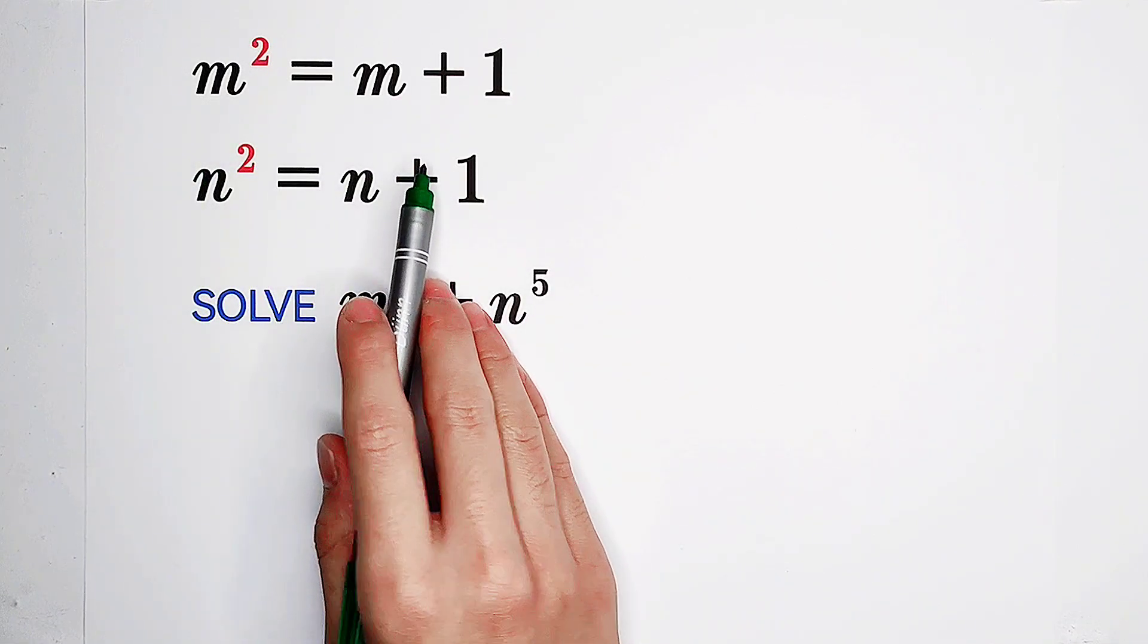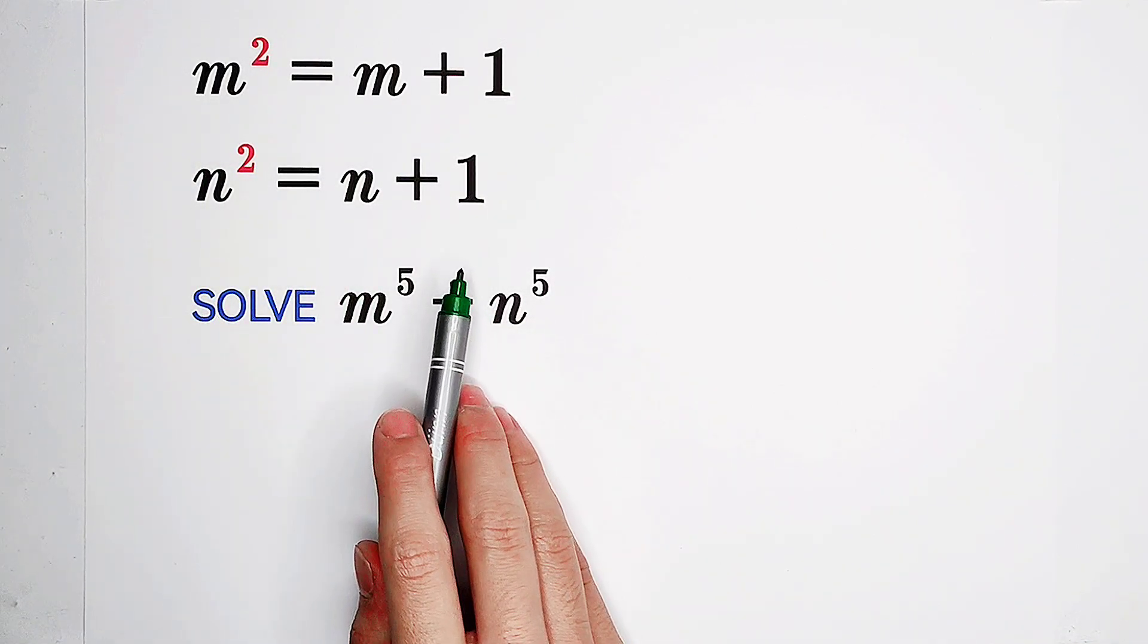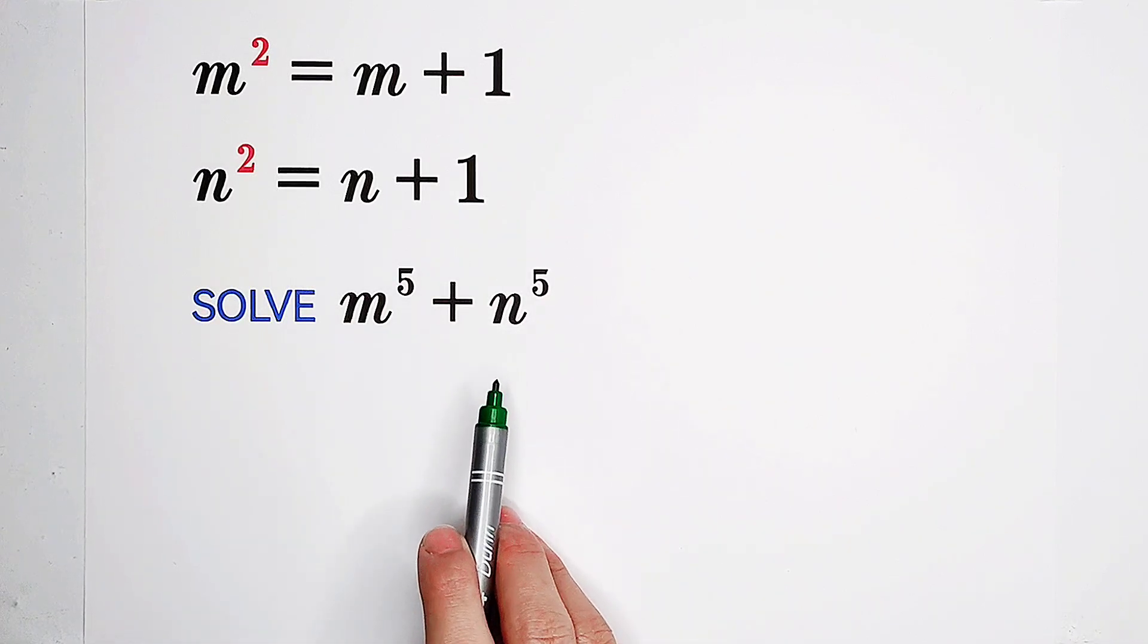m squared equals m plus 1, n squared equals n plus 1. What's the value of m to the power 5 plus n to the power 5?